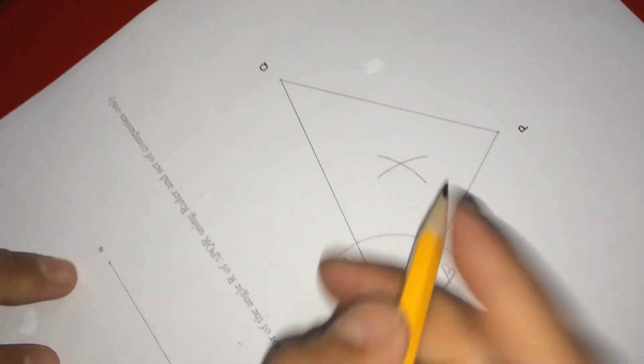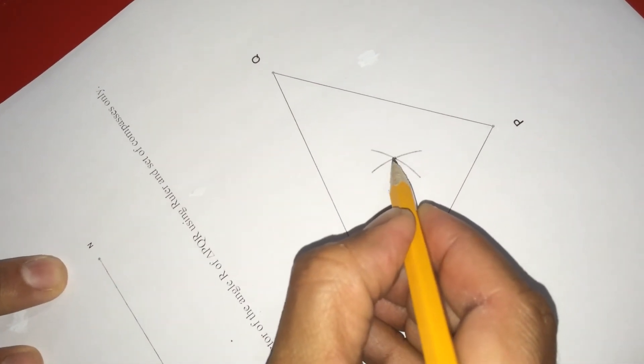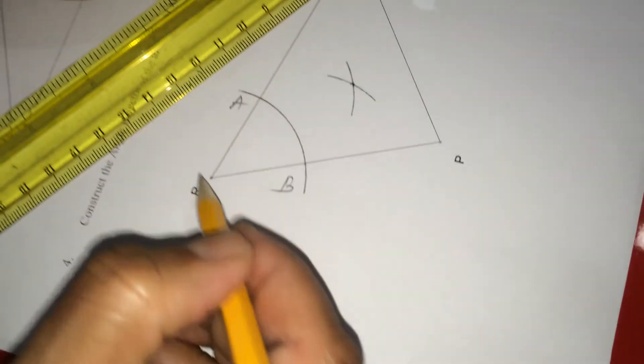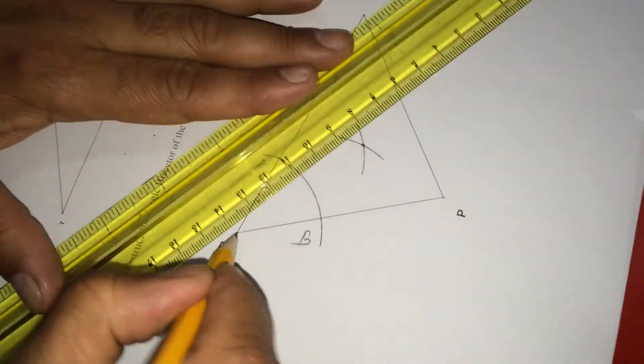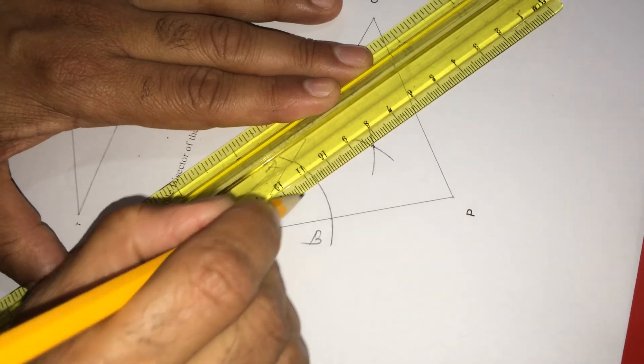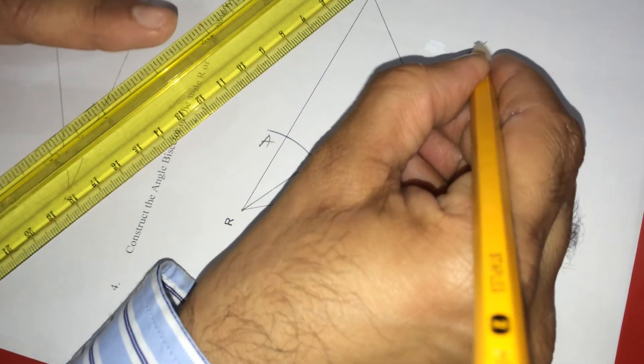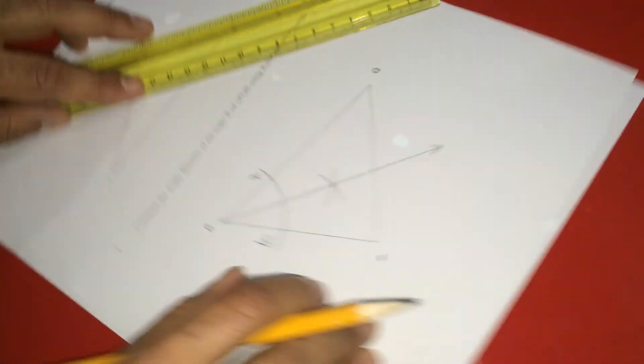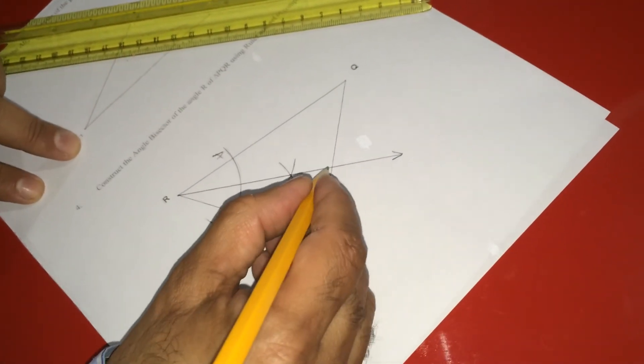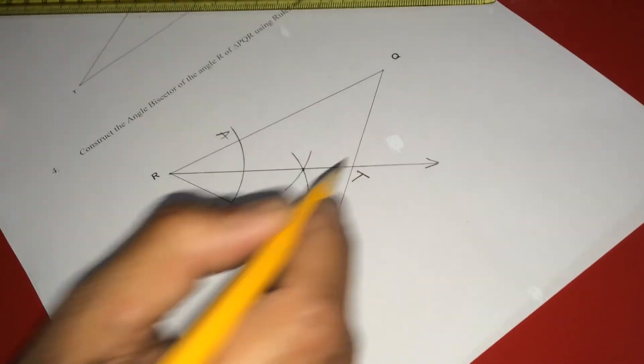So this is the point of intersection, that point I join with R. So if I join this with this, like this, it will go in this way. So if you write this as, you can name any point you like, some T.